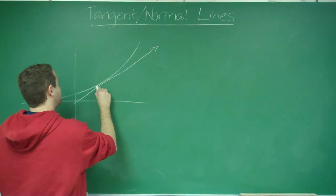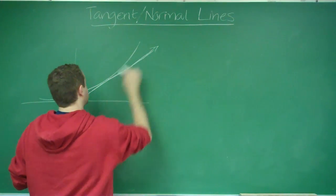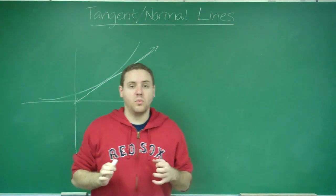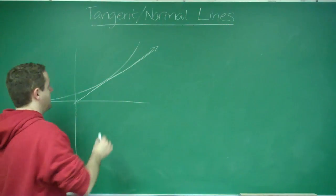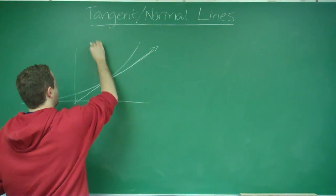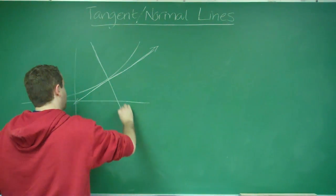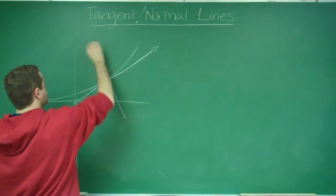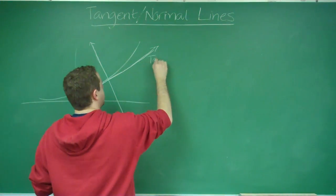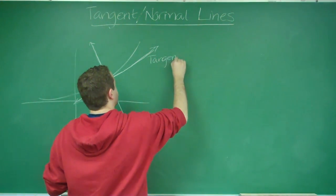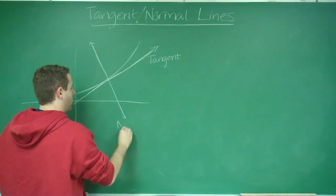Remember that the tangent line is the line that touches the graph just at that one point. The normal line is the line that's perpendicular to that, which would go something like this. This one's the tangent line, and this one is the normal line.